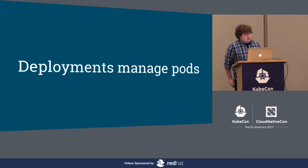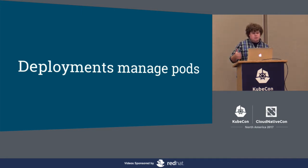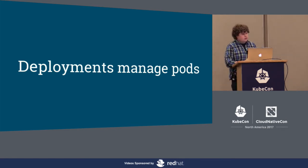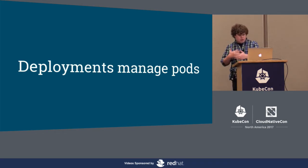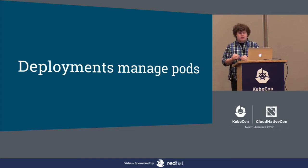The way we typically manage pods is through a deployment. A deployment is a declarative way of managing pods — we can specify what containers we want to run and how many instances of those pods we want in our cluster. Under the hood, deployments use replica sets to ensure that the requested number of pods equals the number running in the cluster. When we create a deployment, Kubernetes handles creating a replica set, which creates the pods, and then eventually those pods get scheduled by another component and run by yet another.